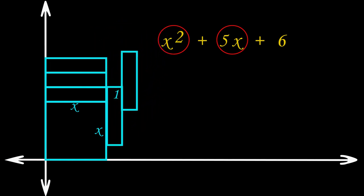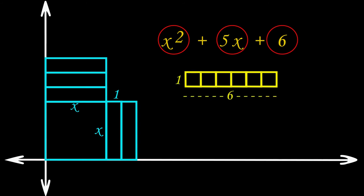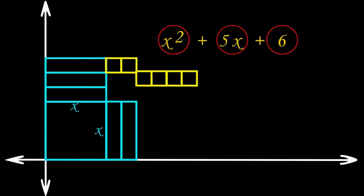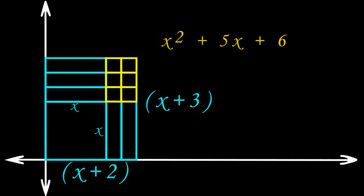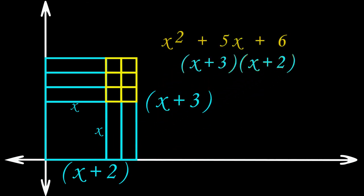We can rearrange the rectangles to create a larger rectangle and express the polynomial as a product of two terms — that is, we factorize it. For the third term 6, we consider 6 unit squares, each with side 1. Placing them completes the rectangle, which has length x plus 3 and breadth x plus 2. So we have visually factorized x squared plus 5x plus 6.